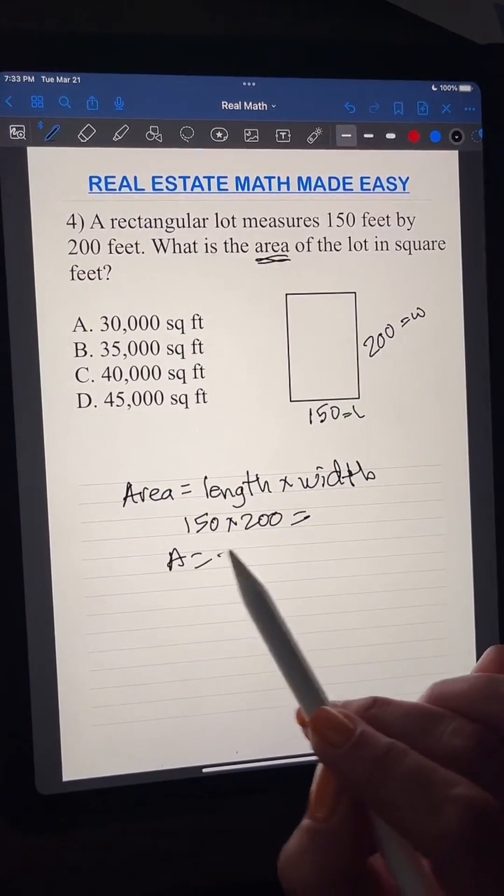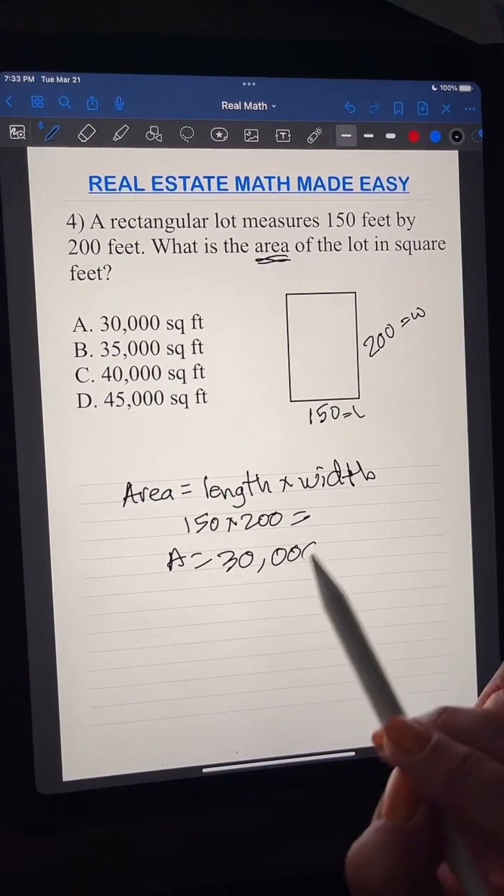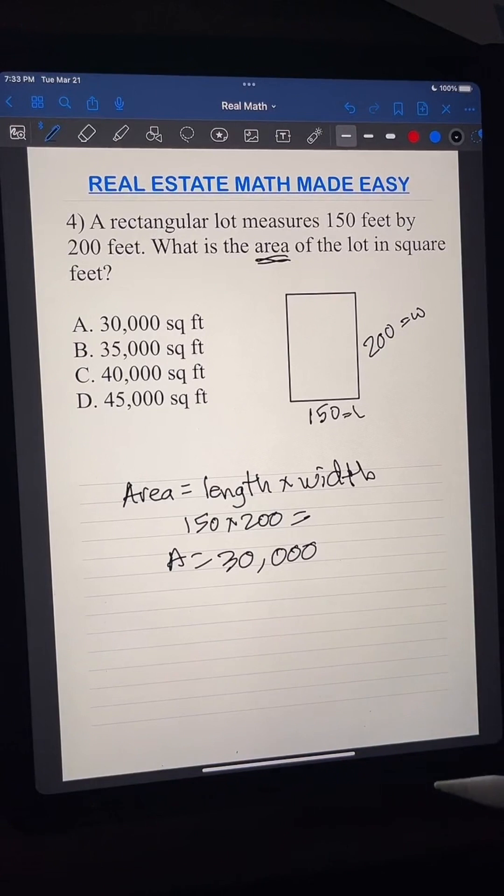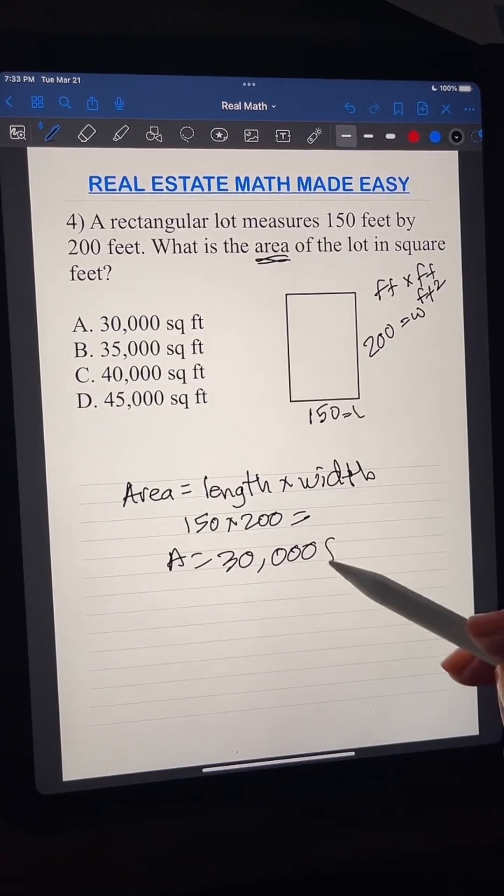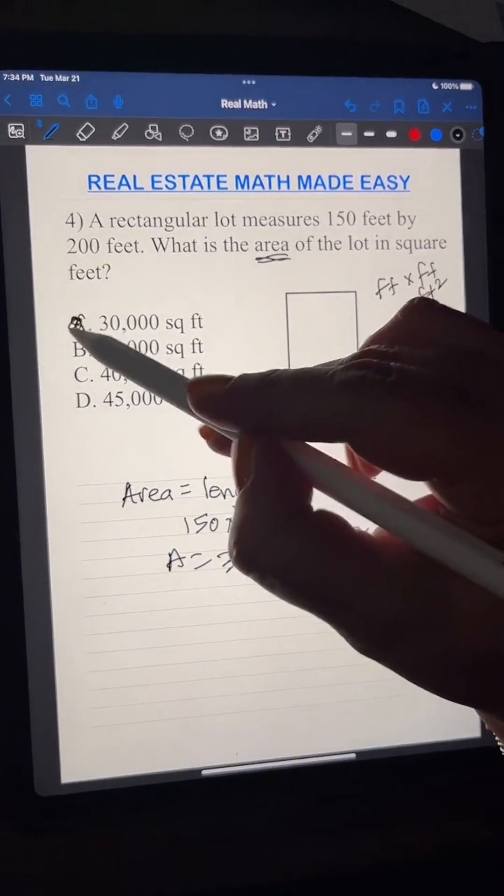So when we multiply 150 times 200, we get 30,000, okay? And I don't know if you guys were in my other life, my previous life, that remember when you have a foot times a foot. So foot times foot, that's going to give us square feet. That's why area is always in square feet, okay? So my answer has to be A.